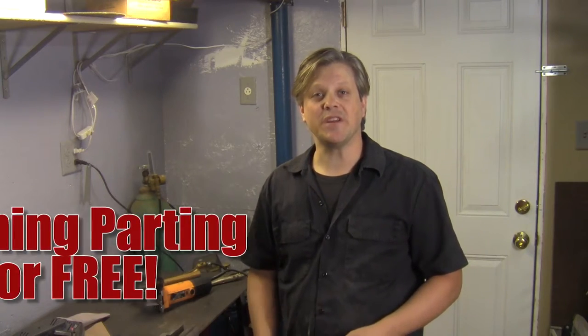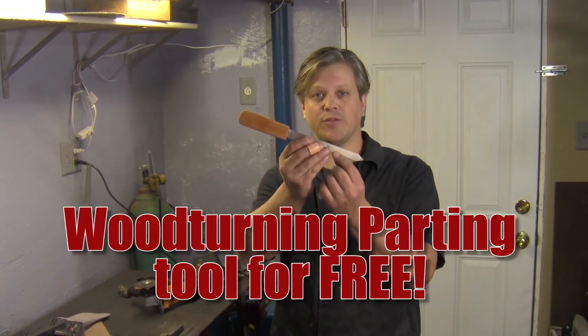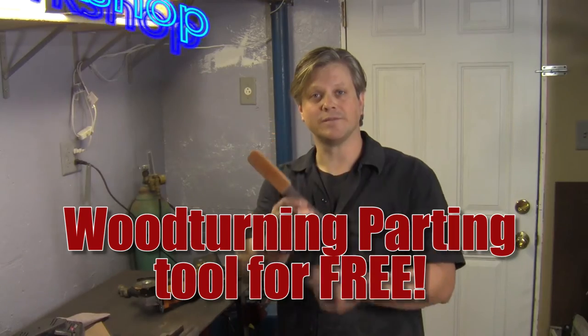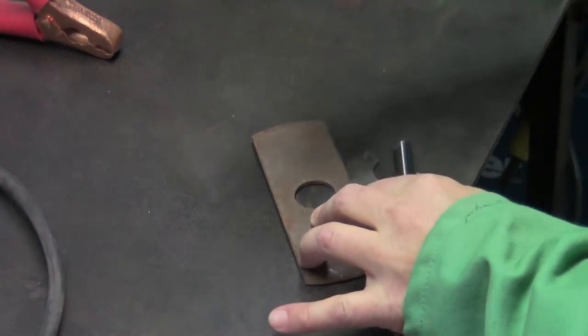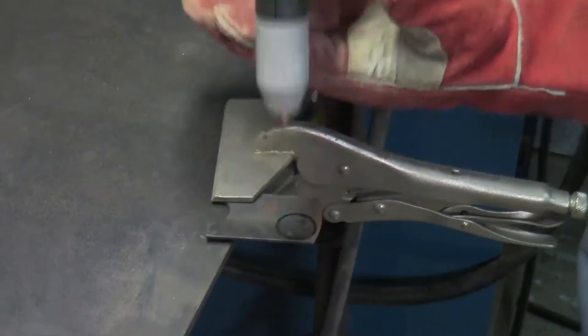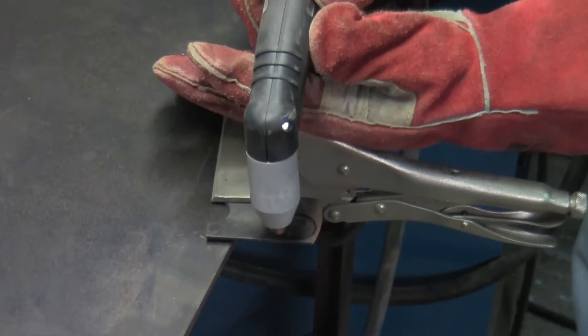Hi, welcome back to Barry's Workshop. In this video, I'm going to show you how I made this parting tool for woodturning for free. The blade that I'm using for this project is from an edger and it is in really rough shape, but I'm convinced that it's good metal.